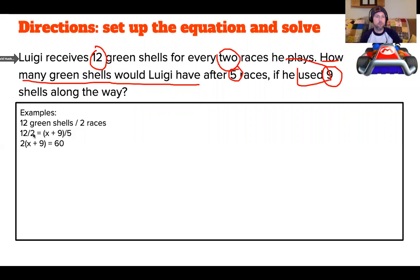So I cross-multiplied, giving me 12 times 5 is 60, and then 2 times the quantity x plus 9. So 2 times the quantity x plus 9 equals 60. x plus 9 equals 30. And then I subtract 9 from both sides, giving me 21 shells left.